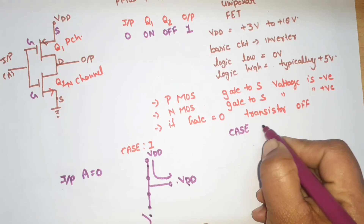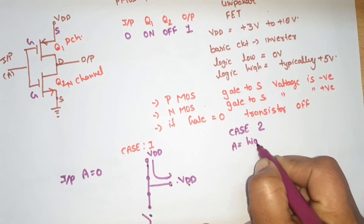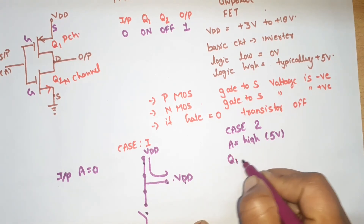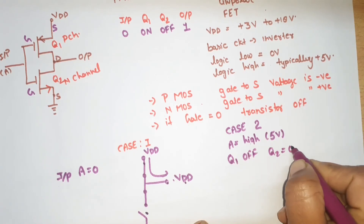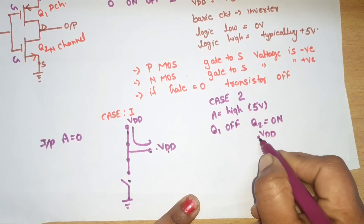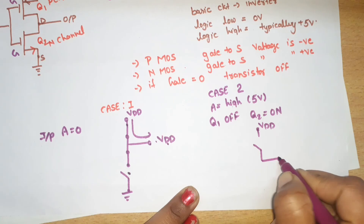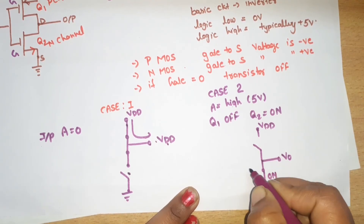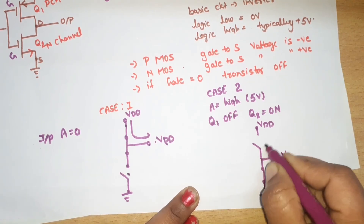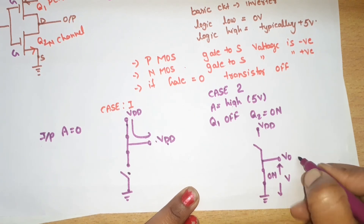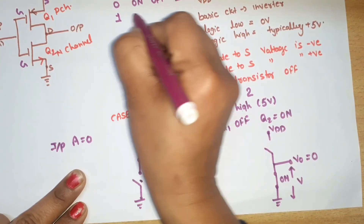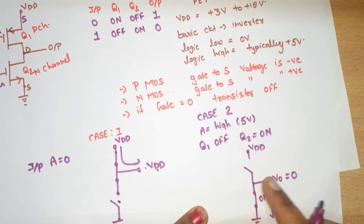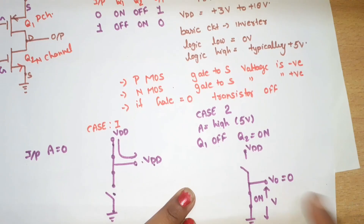Case 2: A is equal to high, approximately 5 volts. In this case the operation is reversed. Q1 (PMOS) will be off — open circuit. Q2 (NMOS) will be on — closed circuit. VDD is disconnected from output because Q1 is open. The output is connected through Q2 to ground, so the output voltage is 0 volts.